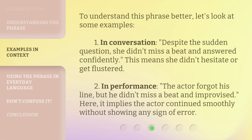To understand this phrase better, let's look at some examples. First, in conversation: despite the sudden question, she didn't miss a beat and answered confidently. This means she didn't hesitate or get flustered. Second, in performance: the actor forgot his line, but he didn't miss a beat and improvised. Here, it implies the actor continued smoothly without showing any sign of error.